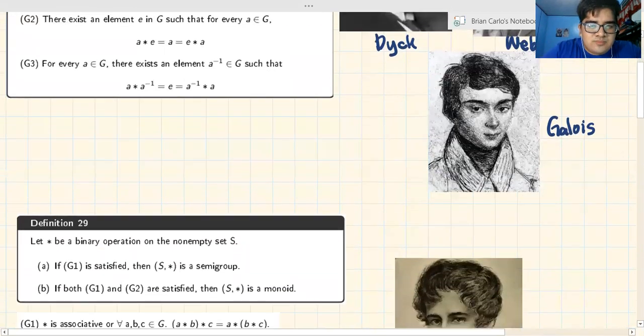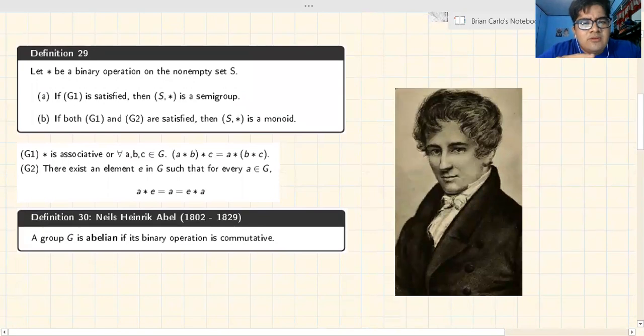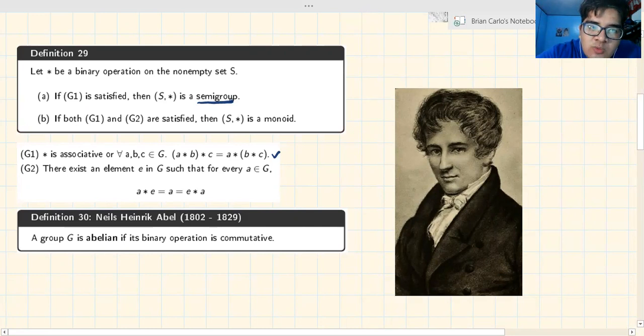Now, let's have more definitions. If there will be a case that one of those doesn't hold, are there names for them? Yes. Let star be a binary operation again on a non-empty set S. Now, if G1 is satisfied - G1 is this, star is associative - then the new set S comma star is called a semigroup. You are called a semigroup when G1 is satisfied but G2 and G3 are not satisfied.